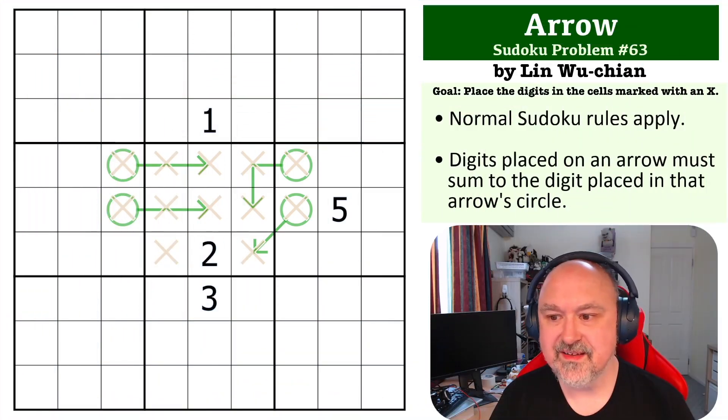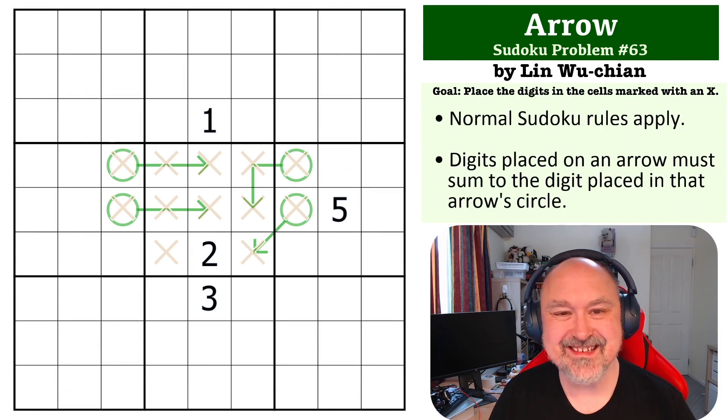Hey everyone, this is Broomster and this is number 63 in my Sudoku problem series. This is an Arrow problem by Lin Wa-chian, and this one my testers basically think is a little bit harder than some of the ones I've done recently.